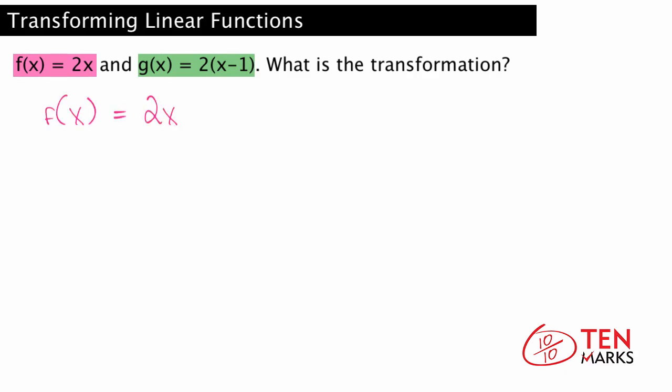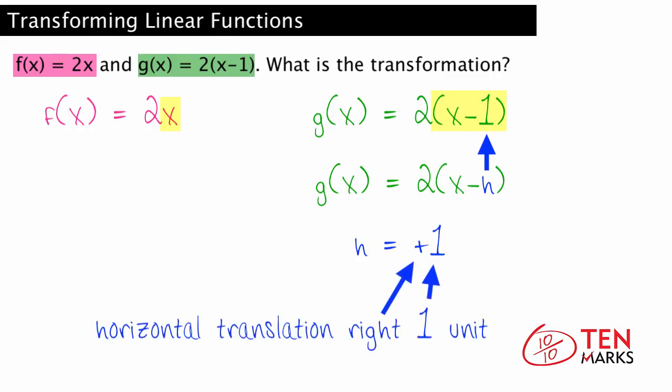Here f is 2x, and g is 2 times x minus 1. Notice the input x on f is replaced by x minus 1 on g. In other words, 1 is subtracted from it, so h is 1. Since h is positive, this represents a horizontal translation to the right by one unit.